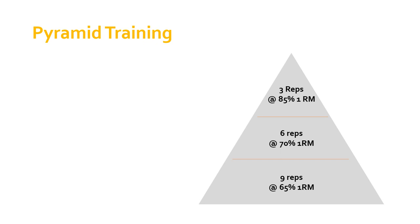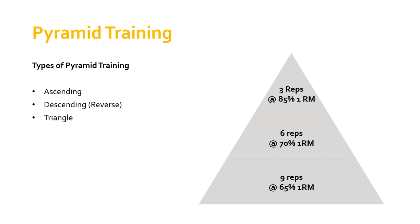Furthermore, on pyramid training, there are actually several different types. We've set up our pyramid with three sets that differ in reps and load. We can decide to do one of three options: we can have a pyramid that is ascending, a descending (sometimes known as a reverse pyramid), or what's called a triangle pyramid. I'll explain what I mean by that just now.